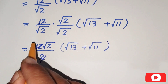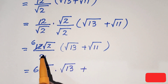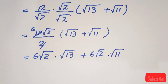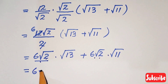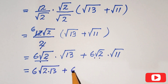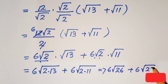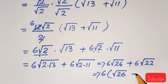Now 12 divided by 2 gives 6. So we have 6 times square root of 2 times square root of 13 plus square root of 11. Distributing: 6 times square root of 2 times square root of 13, plus 6 times square root of 2 times square root of 11. This gives 6 square root of 26 plus 6 square root of 22. Taking 6 as common factor: 6 times square root of 26 plus square root of 22. This is our simplified final result.